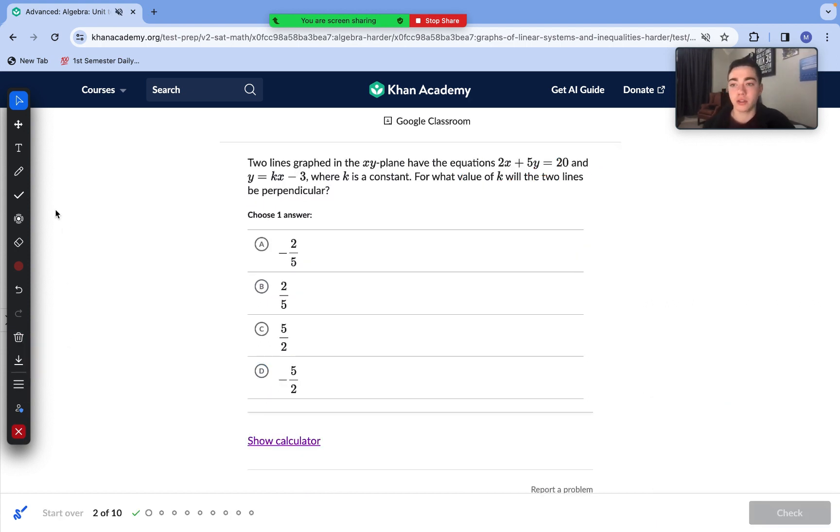Moving to our next question here. Two lines are graphed in the coordinate plane with the equations 2x + 5y = 20 and y = kx - 3. For what value of k will the two lines be perpendicular? We need to understand that with two linear equations being perpendicular, the relationship between their slopes is negative reciprocal. So our first step is to find the slope of this line. It's in standard form. Let's convert it to y = mx + b format or slope-intercept form. We subtract 2x from each side, so our equation now looks like 5y = -2x + 20. Now we can divide every term by 5 to isolate that y.